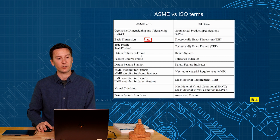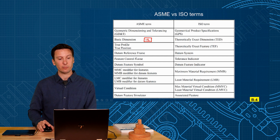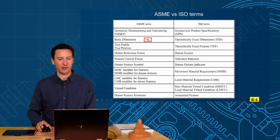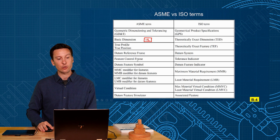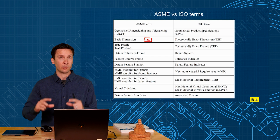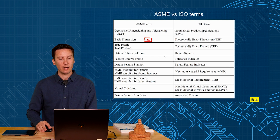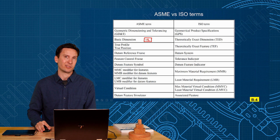We call it a Datum Reference Frame — that's the three-plane coordinate system. ISO calls it a Datum System — a little shorter and snappier. We call it a Feature Control Frame, the frame that we control features with, and ISO calls it a Tolerance Indicator instead.